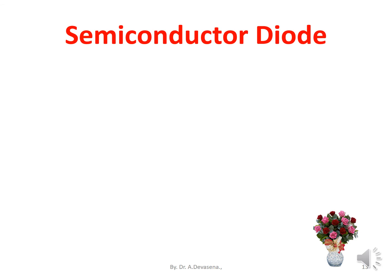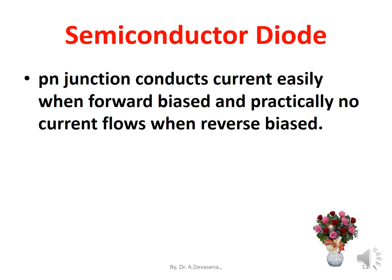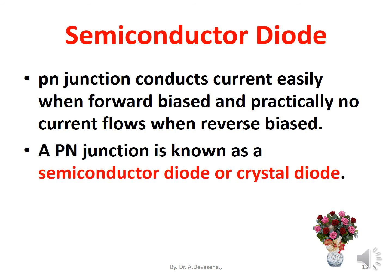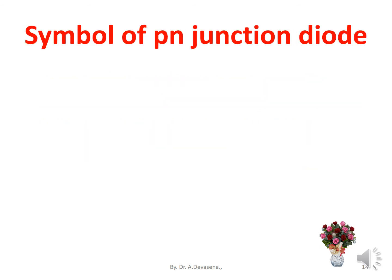A P-N junction conducts current easily when forward biased and practically no current flows when reverse biased. A P-N junction is therefore known as a semiconductor diode or crystal diode.